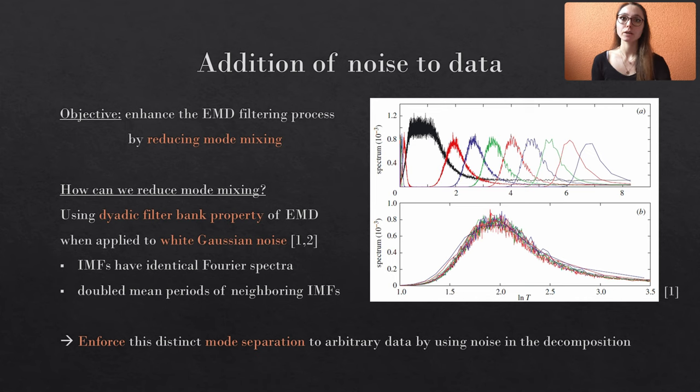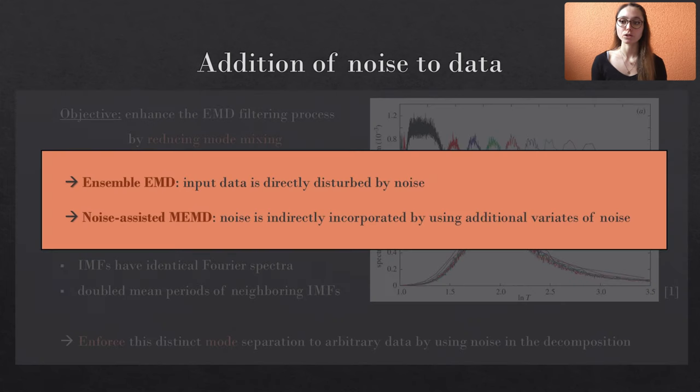There are basically two main routes to incorporate noise in the decomposition and reduce mode mixing. The ensemble EMD adds noise directly to the input data such that you perform the EMD with noisy data. And on the contrary, the multivariate EMD just uses additional variants of noise, so the original data is not altered but augmented with new variants.